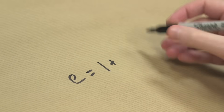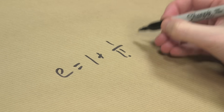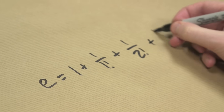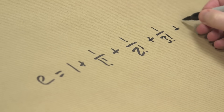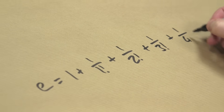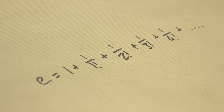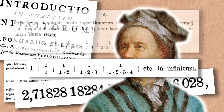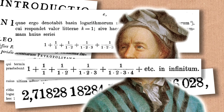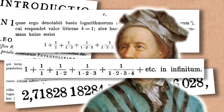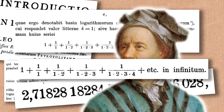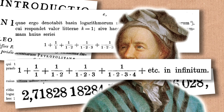He also worked out the value for E to 18 decimal places using a different formula. He found that E was equal to 1 plus 1 over 1 factorial plus 1 over 2 factorial plus 1 over 3 factorial plus 1 over 4 factorial, and this goes on forever. It's a nice formula. Factorials means you're multiplying all the numbers up to that value — so 4 factorial is 4 times 3 times 2 times 1.